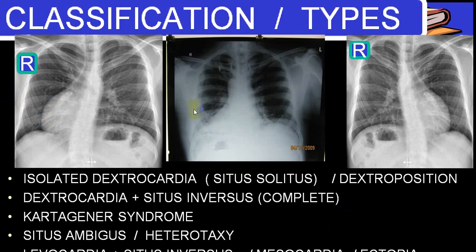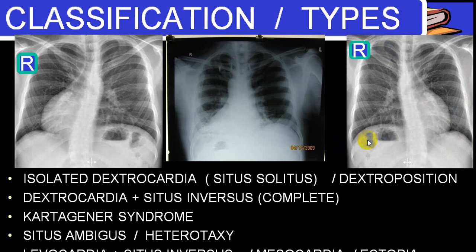This is dextrocardia on the right side; this is levocardia. With situs inversus you can see the apex is pointing towards the left side — that is normal position levocardia — and there is situs inversus where the gastric bubble is on the right side, so the stomach is on the right side. That is situs inversus with levocardia. These are some of the malpositions of the heart.